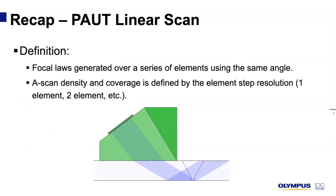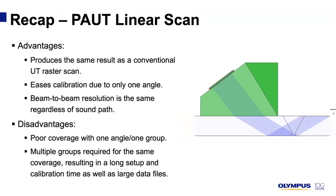First of all, Phased Array linear scan. Basically, you have focal laws generated over a series of elements using the same angle, and the A-scan density and coverage is defined by the element step resolution. One aperture generating one focal law, then we move on to a different aperture generating another focal law with the same angle altogether. The advantages of a linear scan: it produces the same results as a conventional UT raster scan without the need of moving the probe in and out from the weld. It eases the calibration due to only producing one angle. The beam resolution is also the same regardless of sound path as all focal laws are parallel.